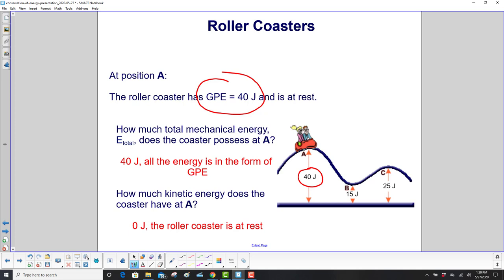So how much total mechanical energy does it have? Well, that's the sum of GPE and KE. But since KE is equal to zero, the total mechanical energy is 40 joules. It's all in the form of GPE. And how much kinetic energy does it have at A? Well, it's at rest, so it has zero joules, no kinetic energy.